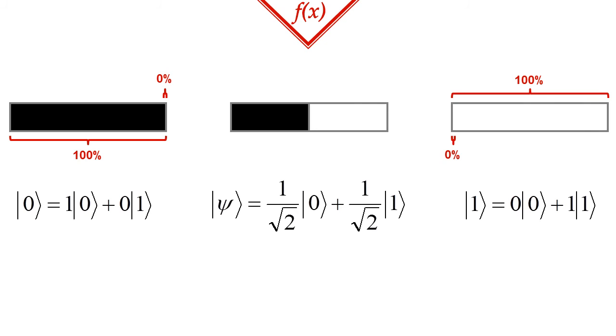If we used probability amplitudes whose absolute value square is 1 half, then the measurement would yield a 0 or 1 50-50% of the time.